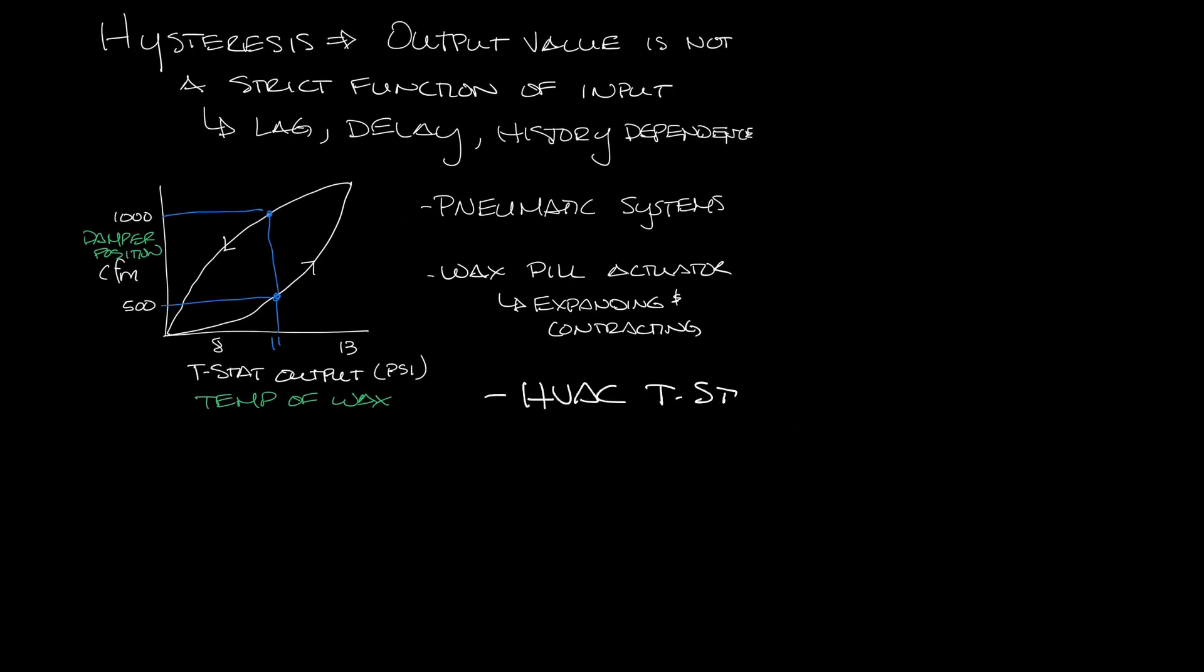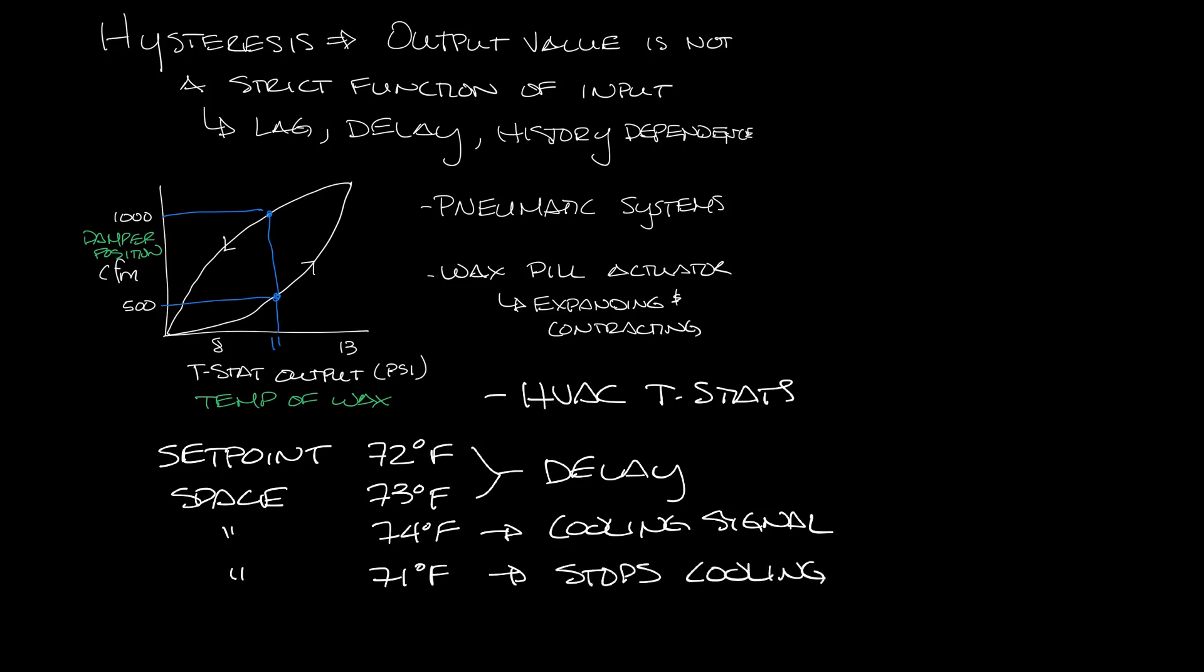Another place that we see hysteresis is in thermostats that use a lag in reacting to the space temperature so that the system doesn't cycle on and off. For instance, let's say that we have a set point of 72 degrees and the space temperature is 73 degrees. If the thermostat has a delay programmed into it, it may not send a cooling signal until it gets to 74 degrees and it may keep cooling the space until it gets down to 71 degrees. This dead band is a programmed hysteresis that keeps your system from cycling on and off.